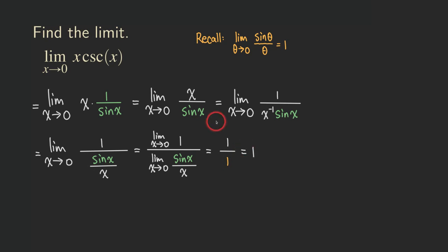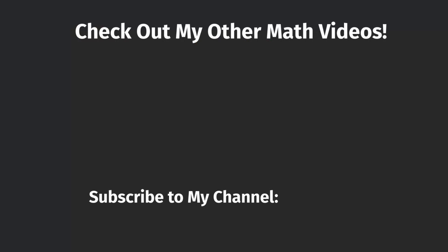So this function x times cosecant x is approaching 1 as x is approaching 0. Then we are finished with this problem. If you like this video, please give me a like, subscribe to my channel, and share my videos with others. It will give me support to make more videos. If you have questions or have a topic that you want me to talk about, please leave me a comment. Thank you for watching this video.